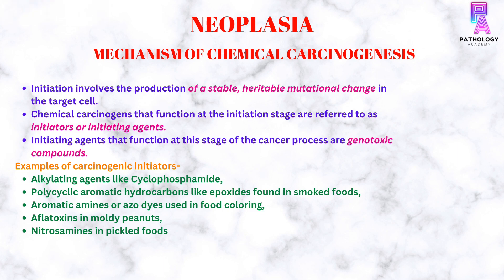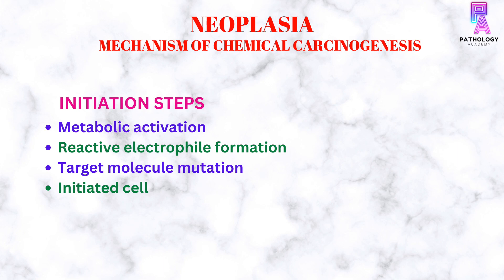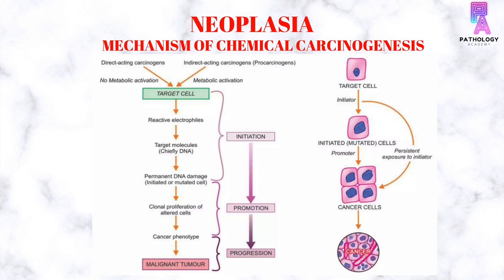Examples of carcinogenic initiators are alkylating agents like cyclophosphamide, polycyclic aromatic hydrocarbons like epoxides found in smoked food, aromatic amines or azo dyes used in food coloring, aflatoxins in moldy peanuts, and nitrosamines in pickled foods. The steps of initiation involve direct acting carcinogens without metabolic activation and indirectly acting carcinogens with metabolic activation causing mutational change in the target cell, followed by formation of reactive electrophiles and permanent DNA damage, resulting in an initiated or mutated cell.